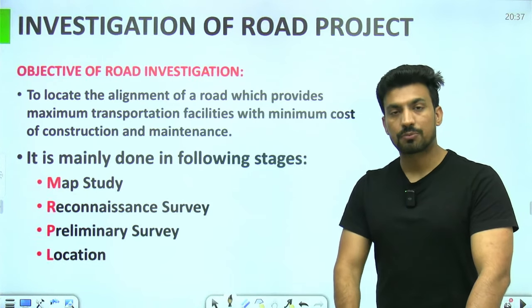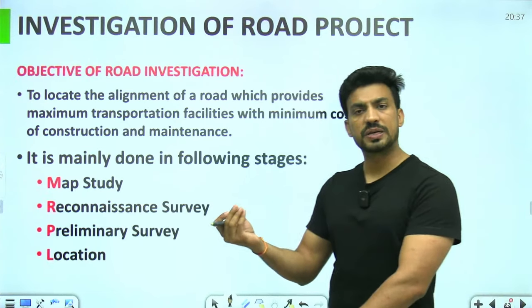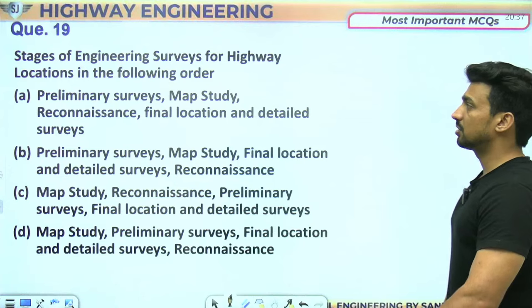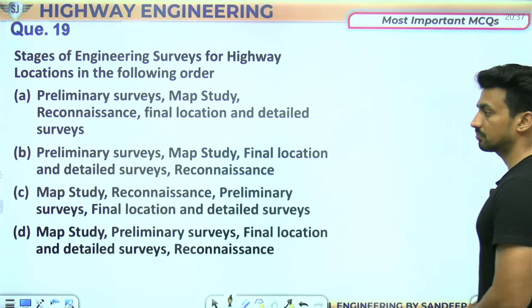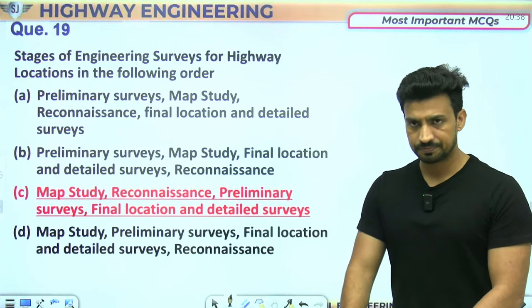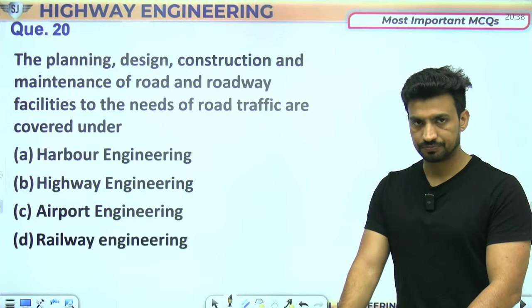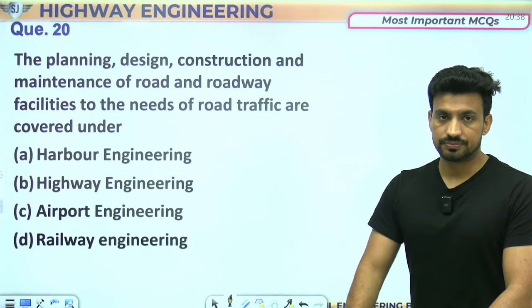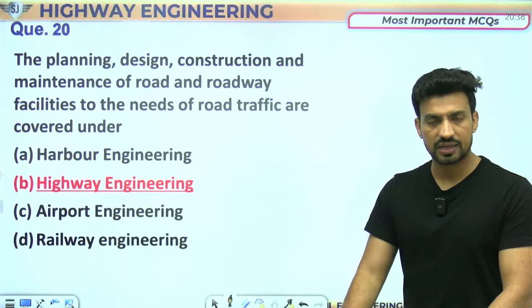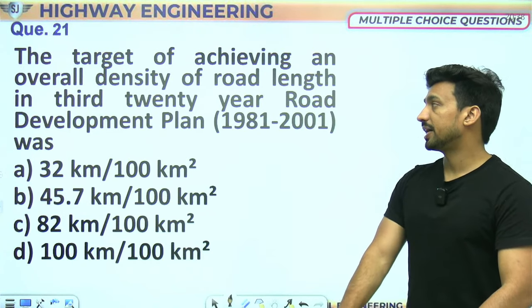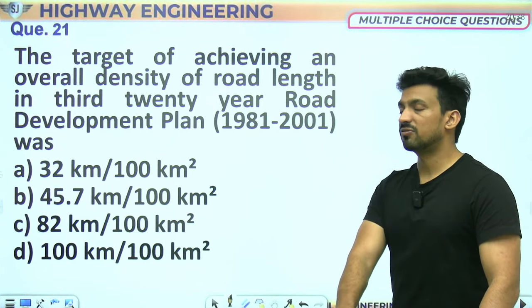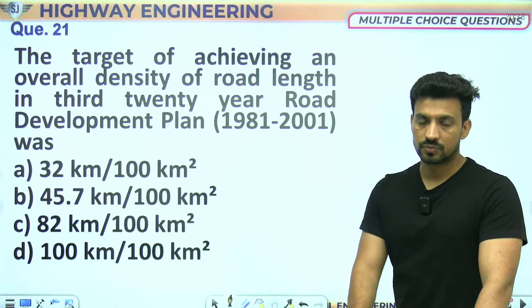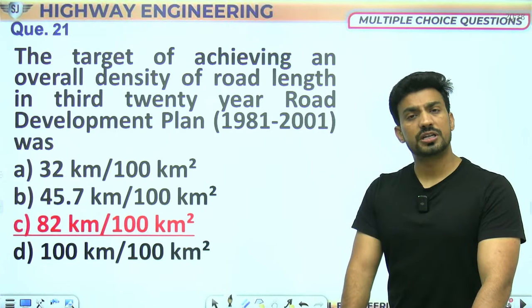Engineering survey के stages इस order में हैं: map study, फिर reconnaissance, फिर preliminary, फिर final location and detailed surveys। Highway की preparation के लिए longitudinal sections और cross sections दोनों की जरूरत होती है। Super elevated curves पर rolling lower edge से upper edge की तरफ proceed करनी चाहिए — नीचे से ऊपर की तरफ। Third 20 year road development plan में road density का target 82 km per 100 sq km था।